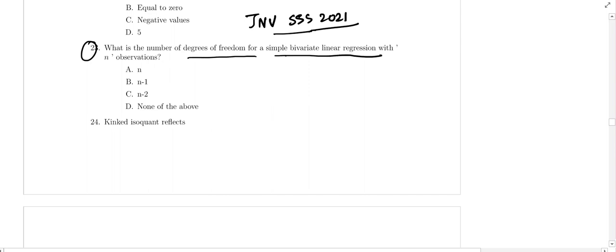The degrees of freedom with n observations will be n minus 2. Now looking at the King dice isoquant.